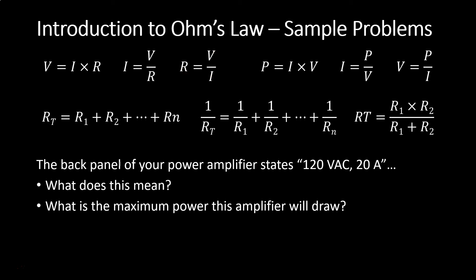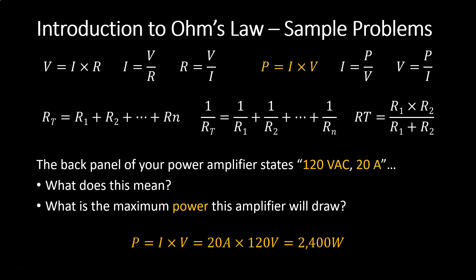The next problem has two parts. You look on the back of your power amplifier and see a label that says 120 volts AC, 20 amps. What does this mean, and what is the maximum power that this amplifier will draw? This is the current rating of the device — sometimes called the power rating, but you need to calculate the power. You're given 20 amps and 120 volts. Using the equation power equals current times voltage, 20 amps times 120 volts equals 2,400 watts.